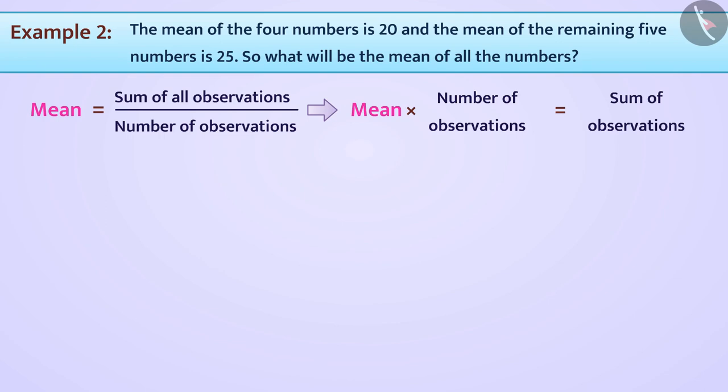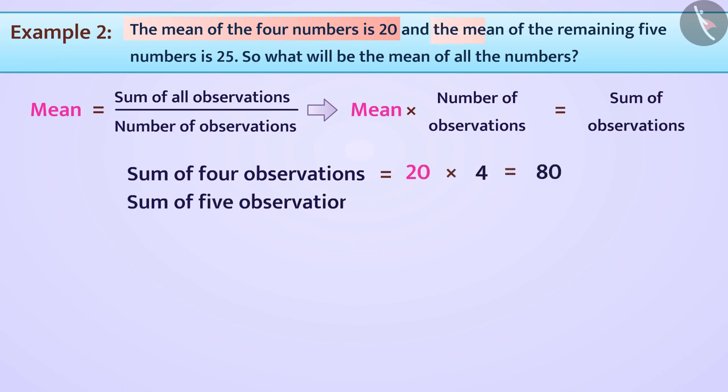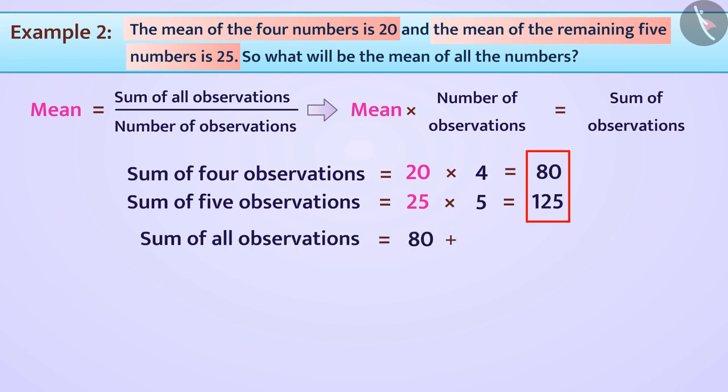Considering this formula, sum of 4 observations is equal to 20 multiplied by 4 which is 80. Sum of 5 observations is equal to 25 multiplied by 5 which is 125. Therefore, the sum of all observations, 4 plus 5 equals 9, will be 80 plus 125 equals 205.